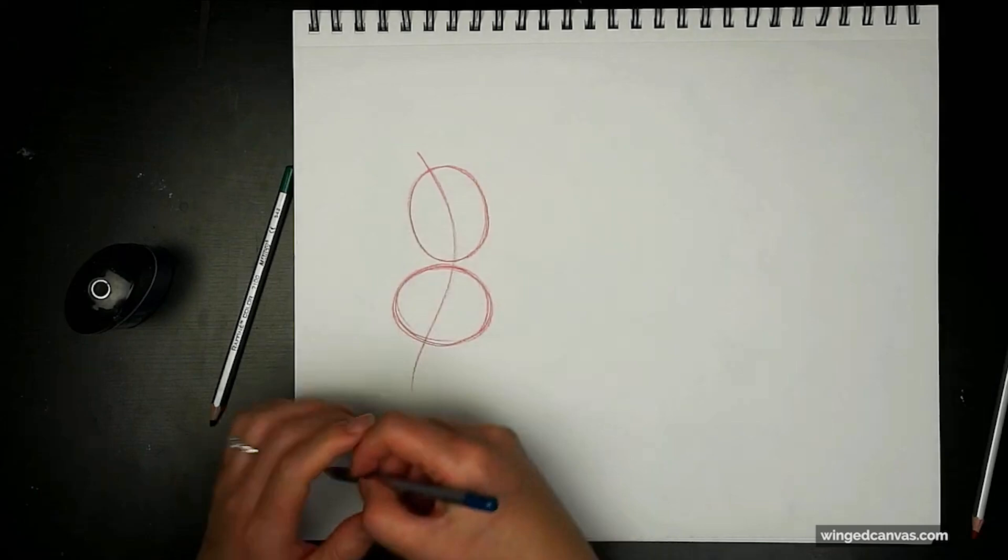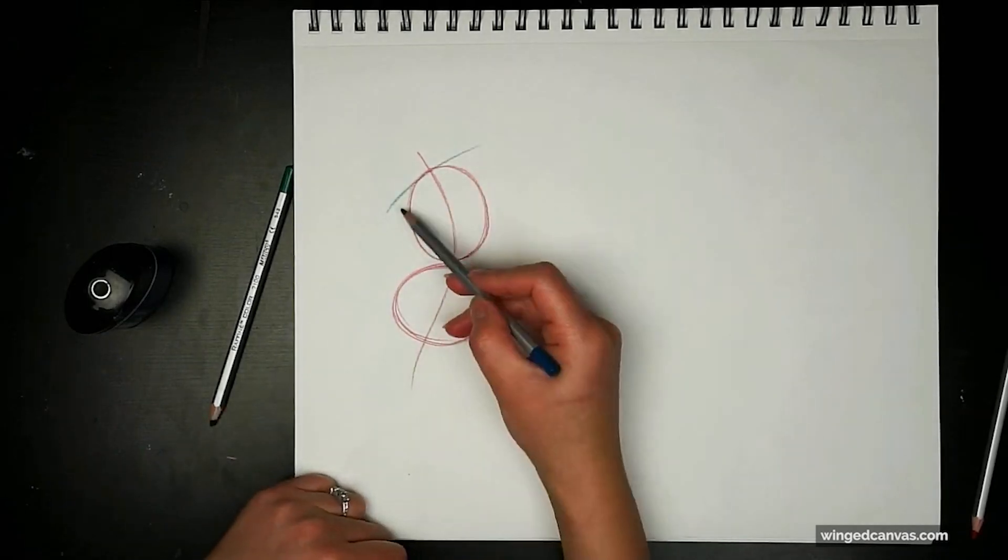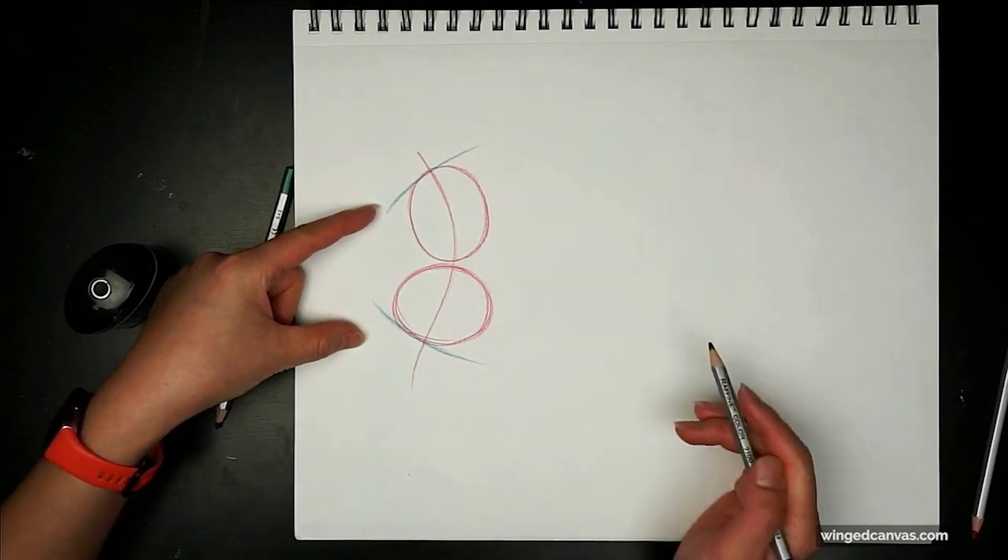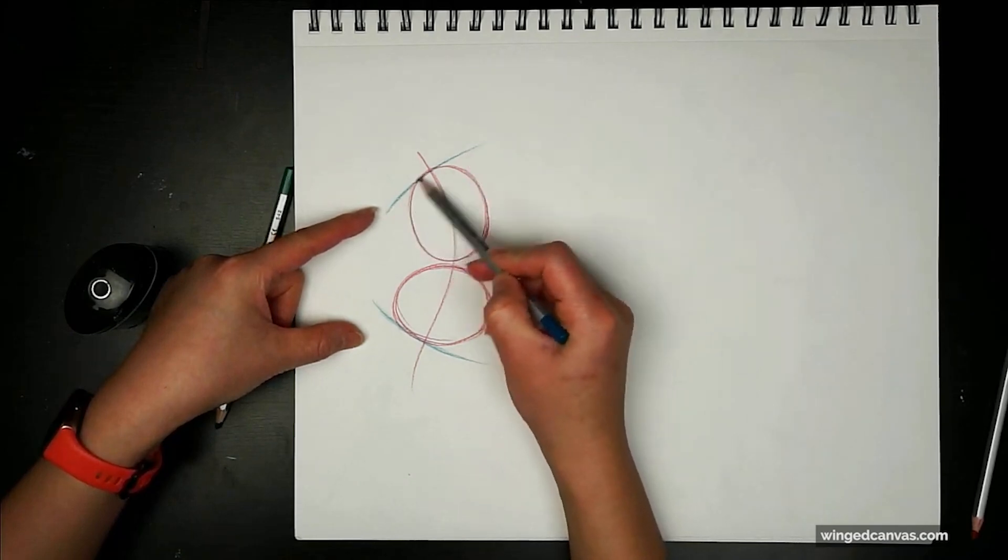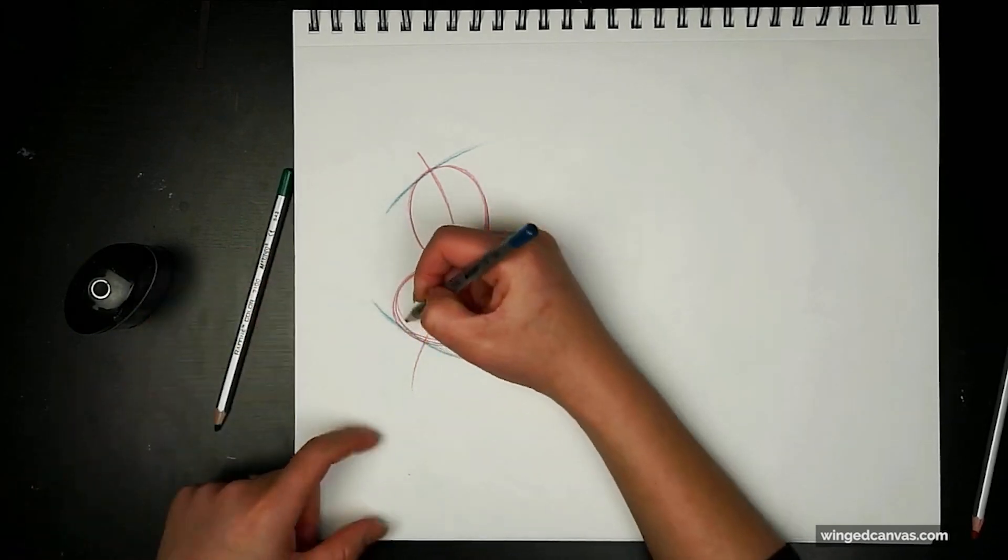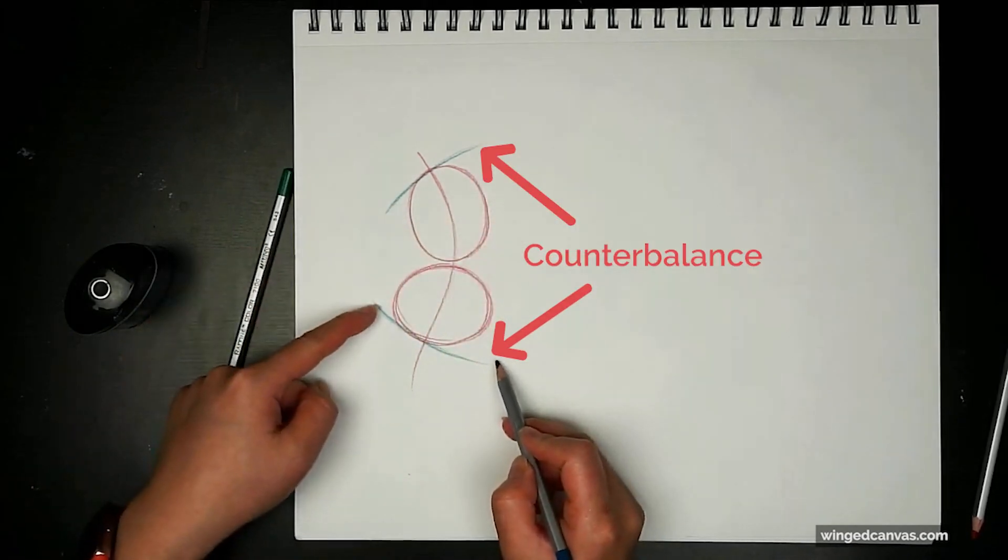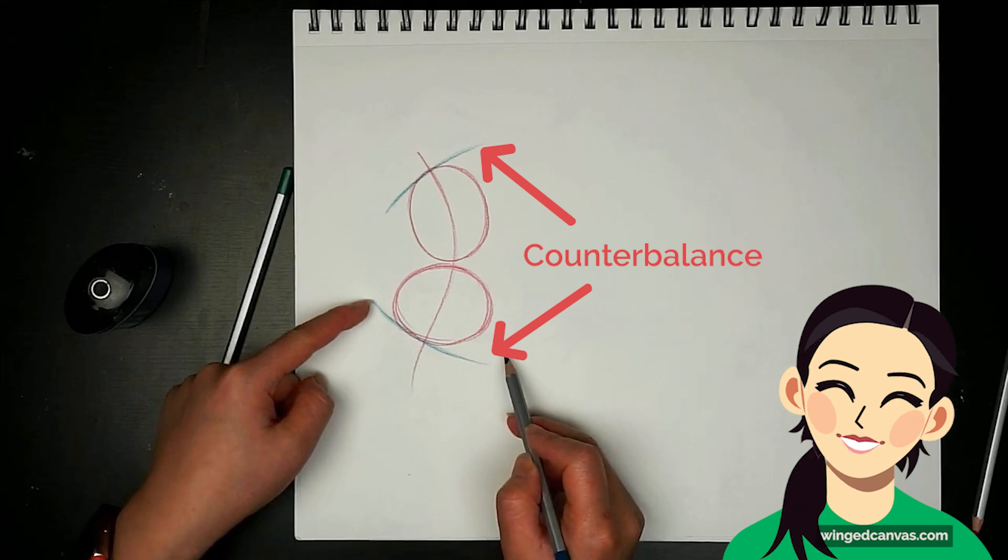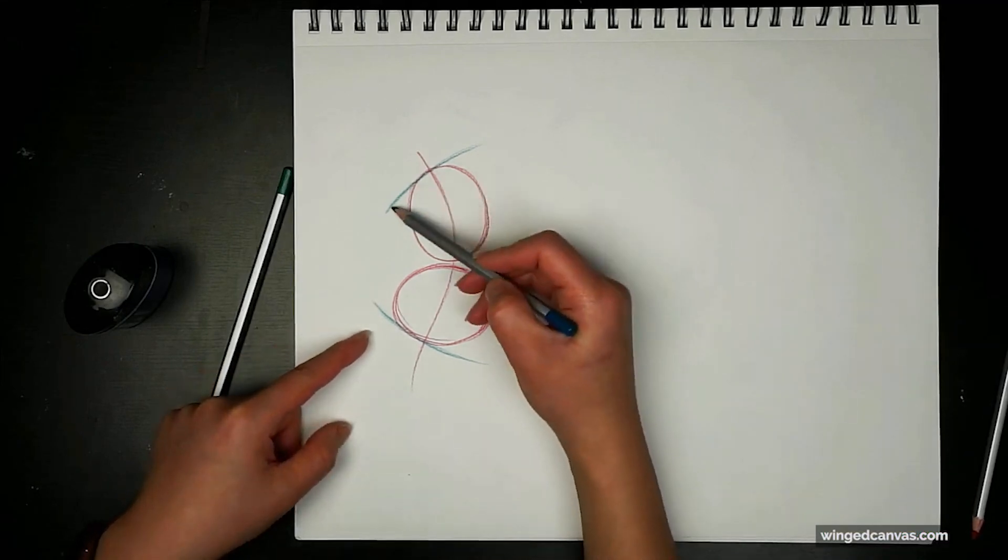So in this case the shoulders are going up and the hips are going down. If your shoulder tilts this way, your hips will counterbalance that naturally. If it doesn't, then you'll fall over. Usually speaking, if your shoulders do this, your head will also counterbalance. So your head will go this way. Head, shoulders and hips will counterbalance.